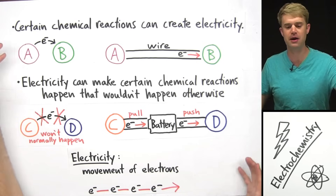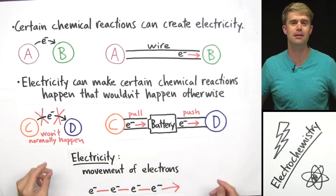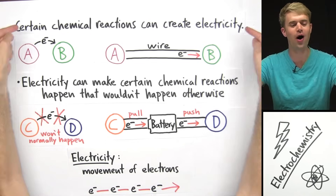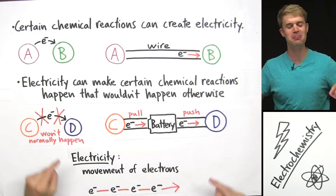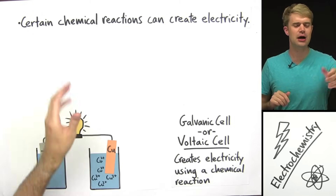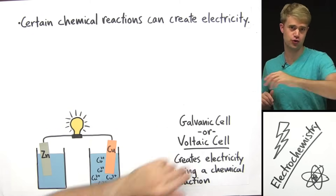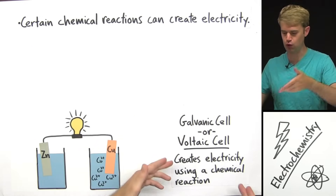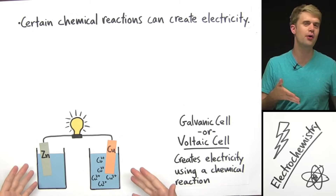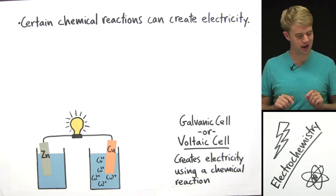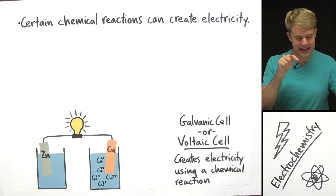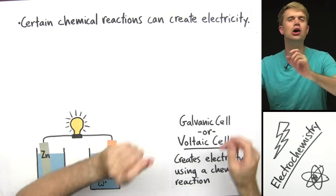So this is kind of a broad, big-picture overview of electrochemistry. Now I want to show you two examples of these situations — one where we're using a chemical reaction to create electricity, and one where we're using electricity to make a chemical reaction happen. Here's how chemical reactions can create electricity. To do this, we often use a device called a galvanic or voltaic cell. I've drawn one right here, and the version I've drawn uses zinc and copper metals. Let's take a look at the chemical reaction happening in this galvanic cell that is what's creating electricity.